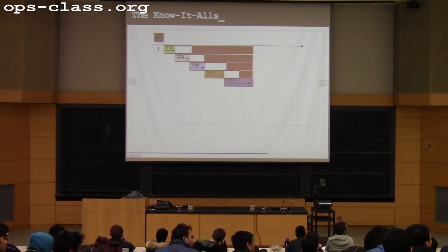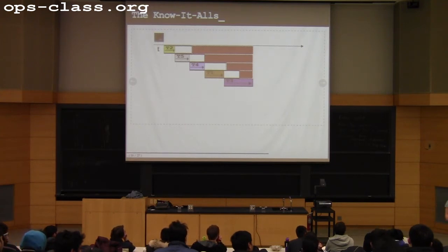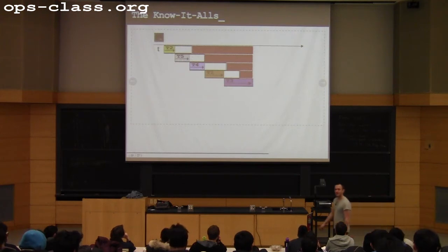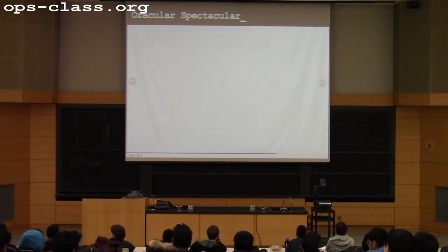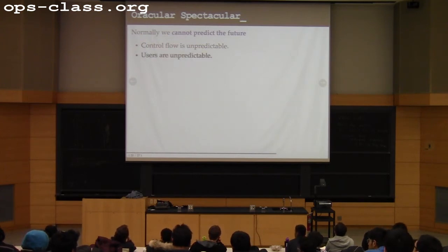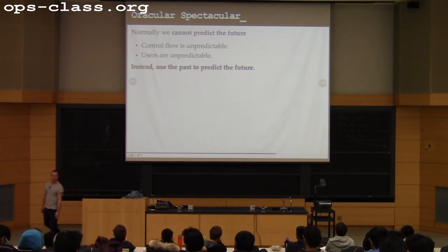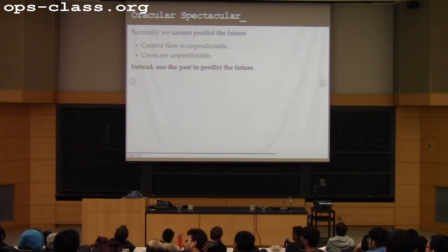Can you implement Shortest Job First? No — this is an oracle algorithm. It knows things you don't. You can't know in advance how long a thread will run. We use it as a benchmark because it represents the best we could potentially do. Normally we cannot predict the future — control flow is unpredictable and users are unpredictable. Instead, we use the past to predict the future.